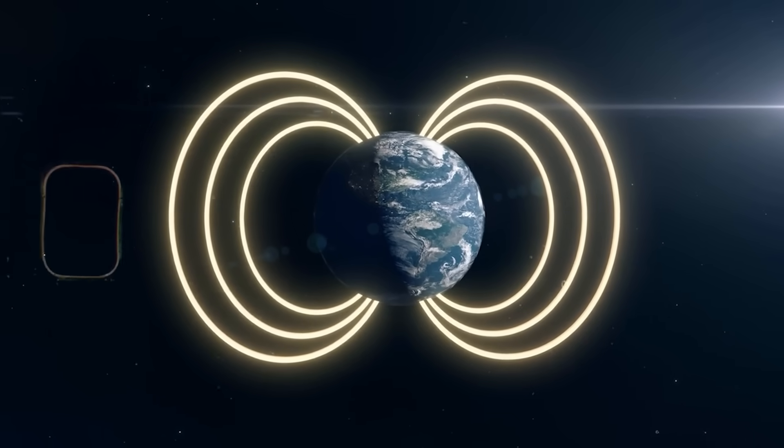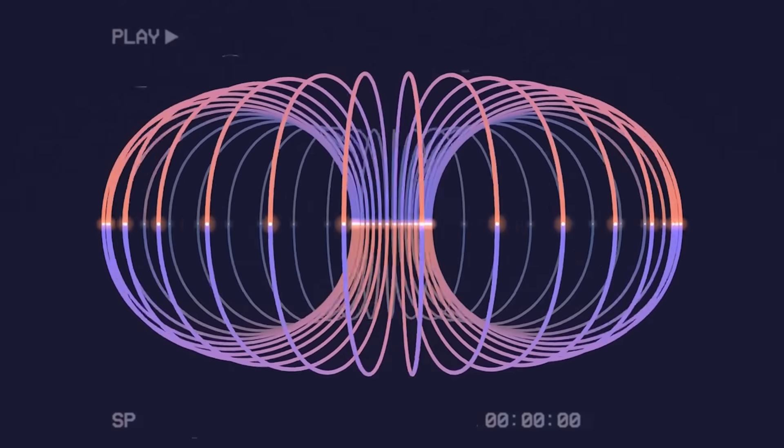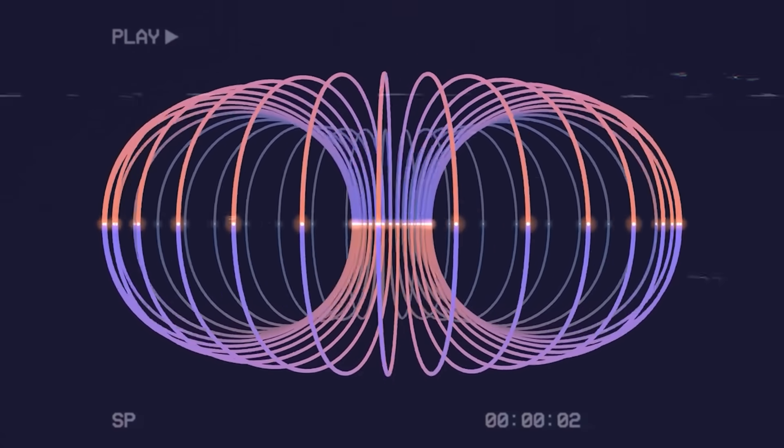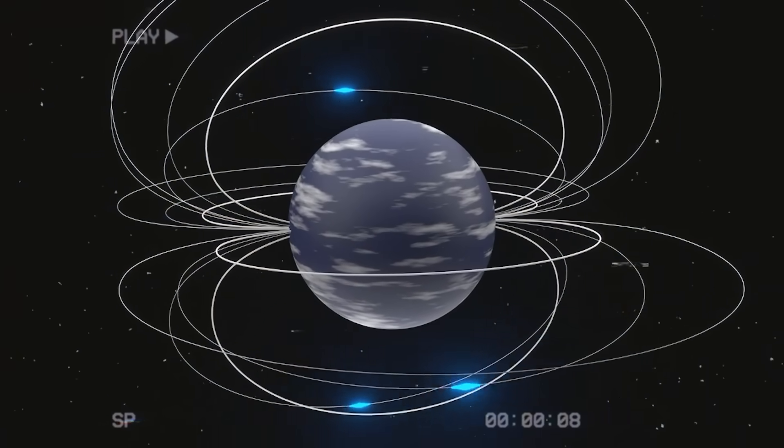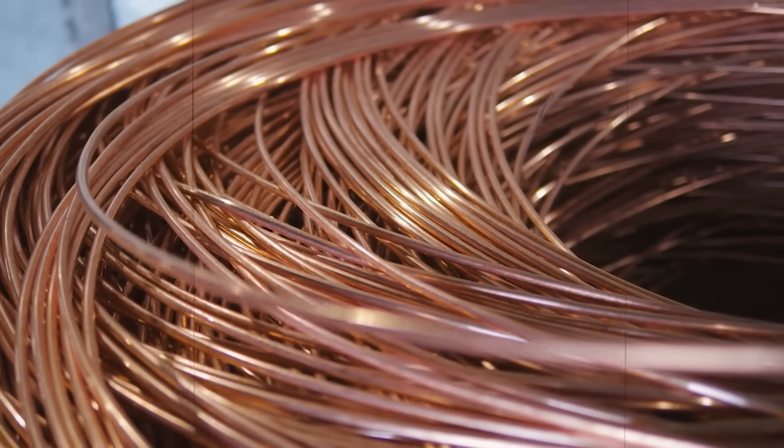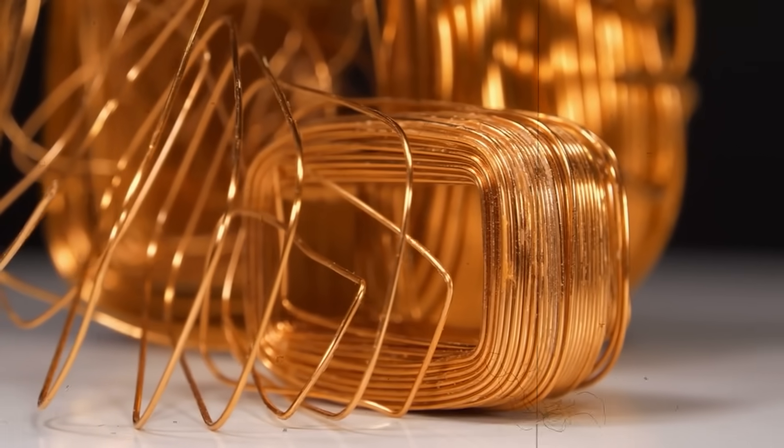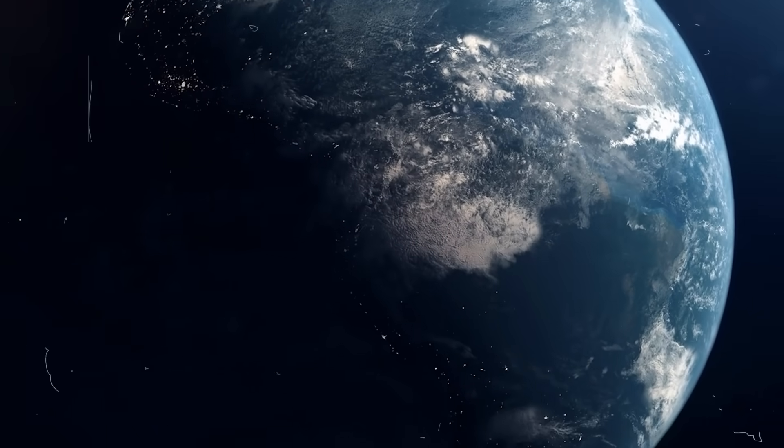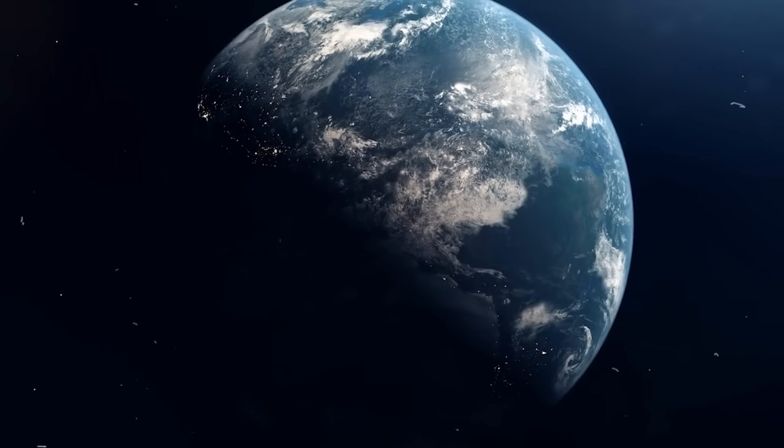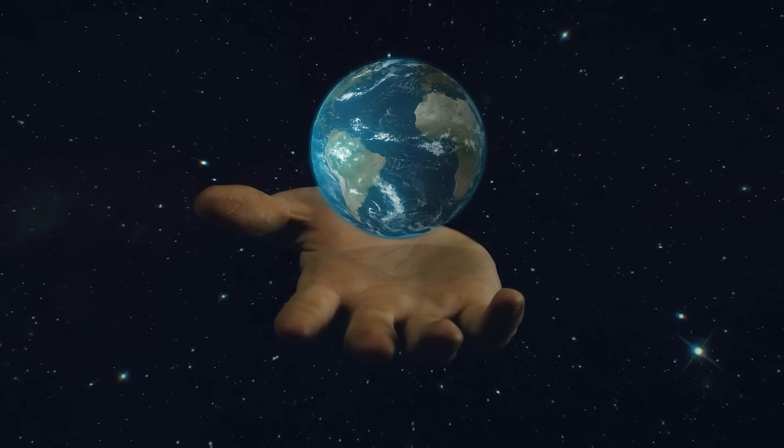The planet spins every day beneath the sky and carries with it an invisible magnetic cloak. If moving a piece of metal through a magnetic field makes electricity, could the Earth's own motion be used in the same way? Faraday asked this question directly. He built experiments with solid metal conductors carefully aligned to test the effect. No matter how he arranged them, the outcome was always the same: nothing. His reasoning was clear: because we move with the Earth, there is no relative motion between us and the field. Without relative motion, there is no induction.